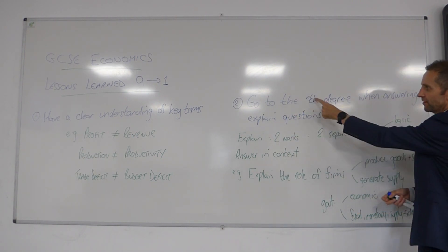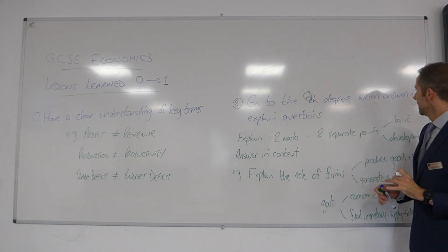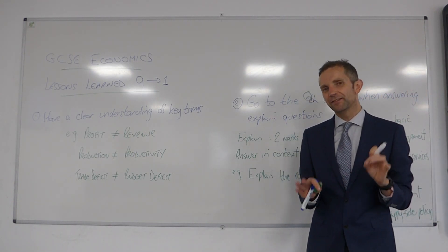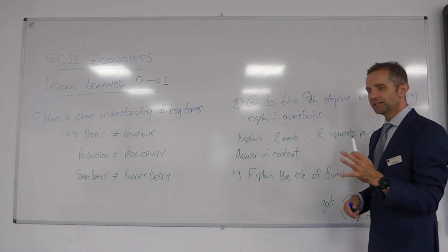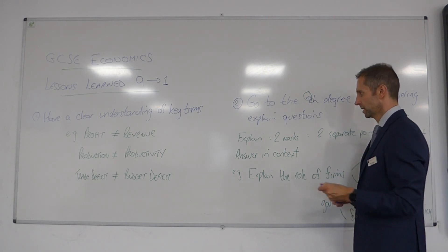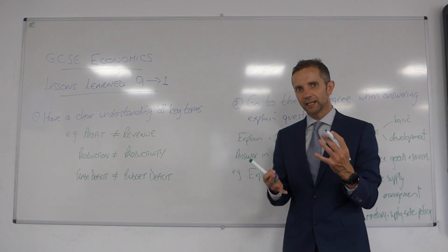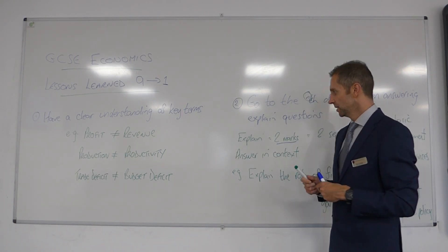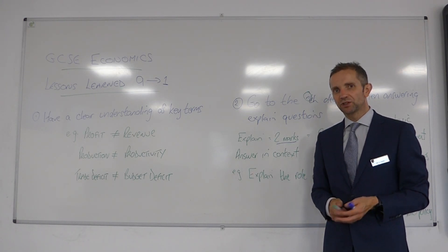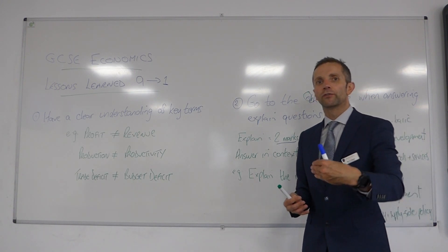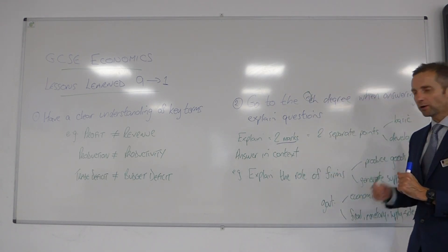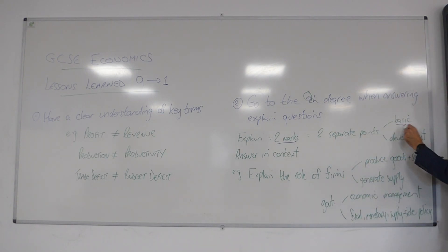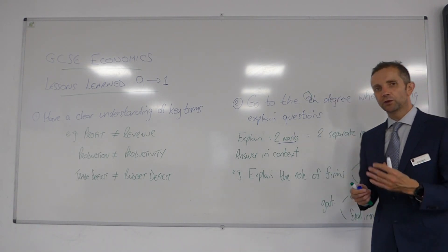Go to the nth degree when answering explain questions — go above and beyond what you think you should have to write, just go that extra mile. These explain questions are worth two marks. On this specification, just giving a definition gets you one mark; you've got to go over and above that. From the examiner's reports, it looks like there are two separate marks: one for a basic standard answer, and another for developing that basic answer.